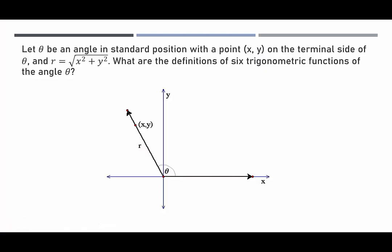We're going to let theta be an angle in standard position with a point (x, y) on the terminal side of theta. The length of the radius — from (0,0) up to (x, y) — has length r, determined using the Pythagorean theorem as the square root of x squared plus y squared. Based on this, what are the six trigonometric functions of angle theta?